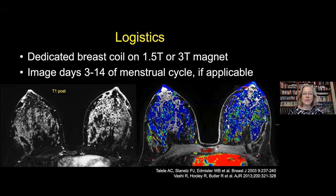One of the most important things when looking at breast MR images is that you need to be sure you're using a dedicated breast coil. That dedicated breast coil will help you maximize your spatial resolution. These studies can be performed on a 1.5 tesla or a 3 tesla magnet, depending upon what you have available at your facility.